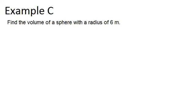In example C, it says find the volume of a sphere with a radius of 6 meters. So the volume of a sphere is always given by 4πr³ divided by 3. So if we want to figure this out, we know our radius is 6 meters, so we can just substitute that in for r.